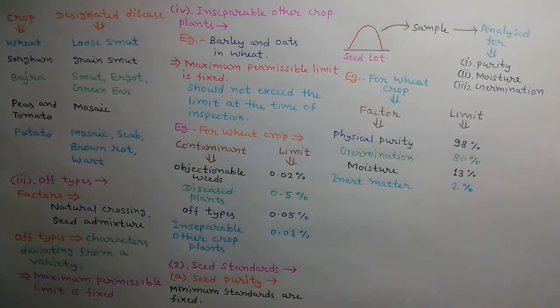After harvesting, threshing and processing, the seed lots are sampled and analyzed for purity, moisture, germination, etc., for which the minimum standards have been fixed. The seed lot cannot be certified if it does not confirm these standards. For example, a certified seed lot of wheat should not have less than 98% pure seeds and not less than 80% germination percentage. The maximum permissible limits for moisture content and inert matter are 13% and 2% respectively.